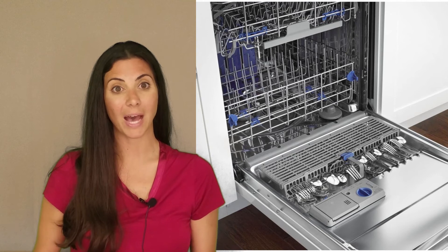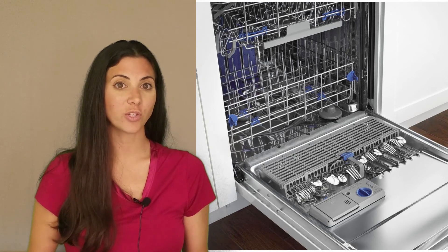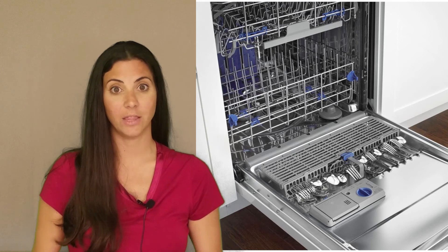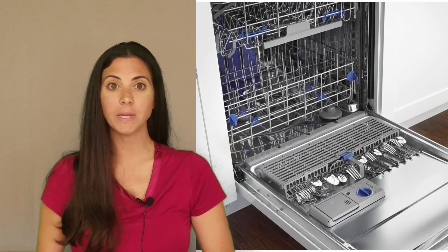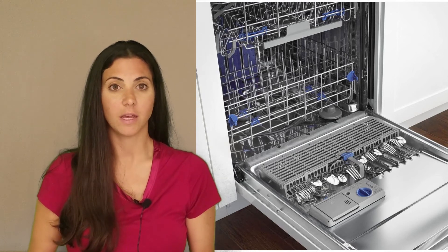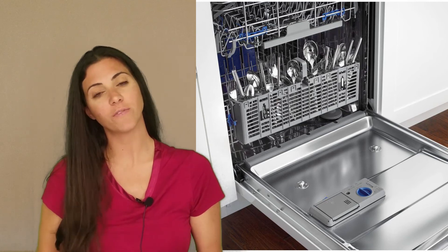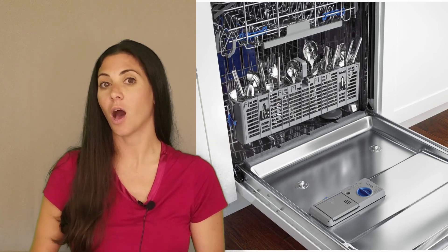The silverware basket can be hung on the door to get it out of the way so that more dishes can be loaded in the rack, but it can be difficult to get long knives and forks into the basket because of the interference with the dispensers. Alternatively, the basket can be positioned on the bottom rack.